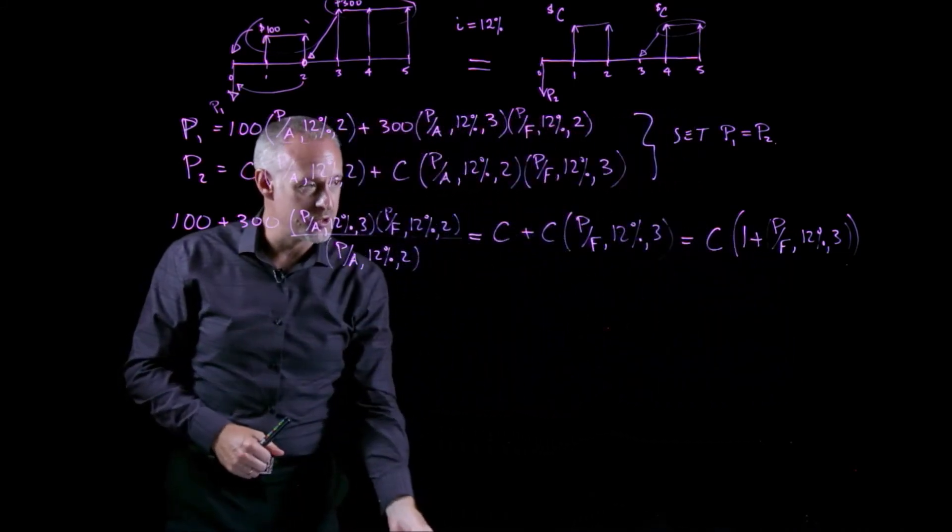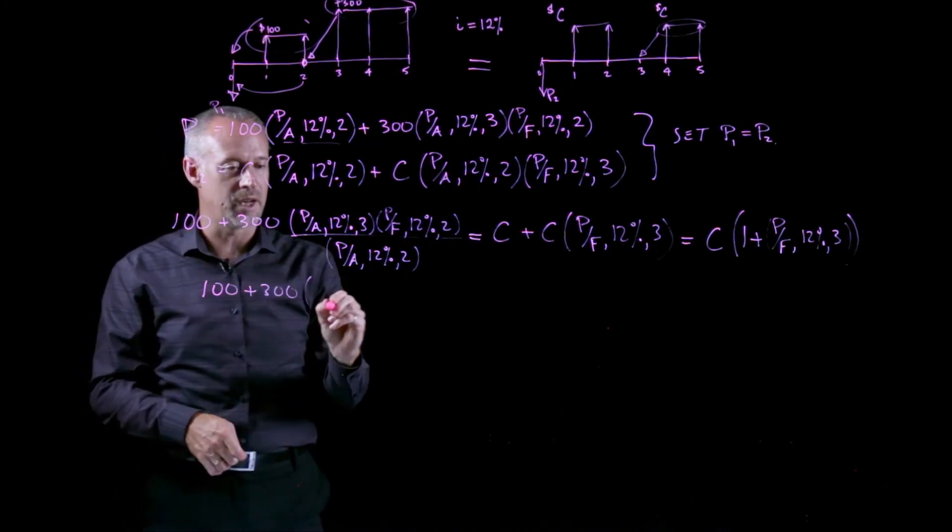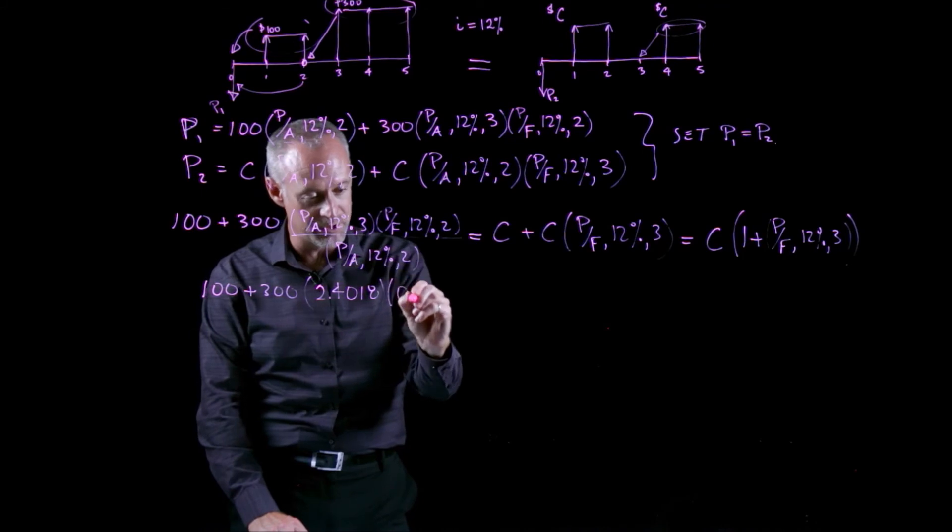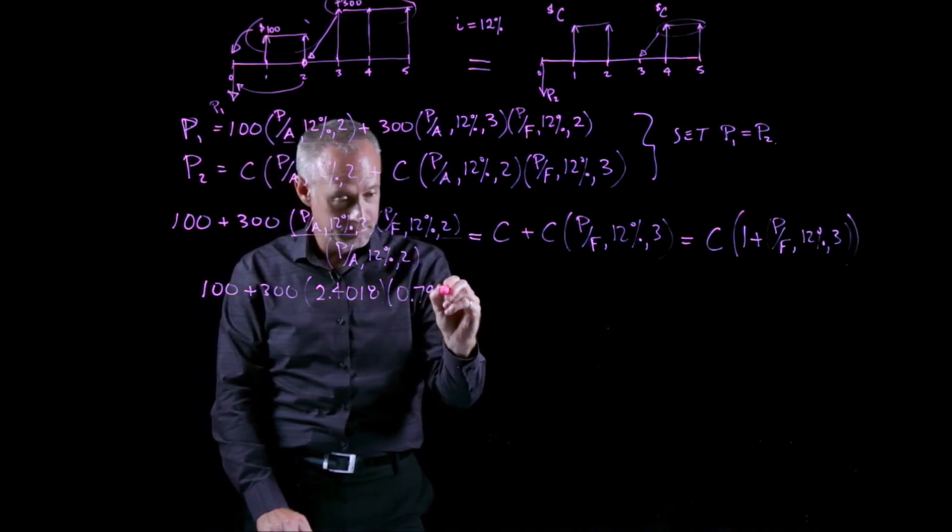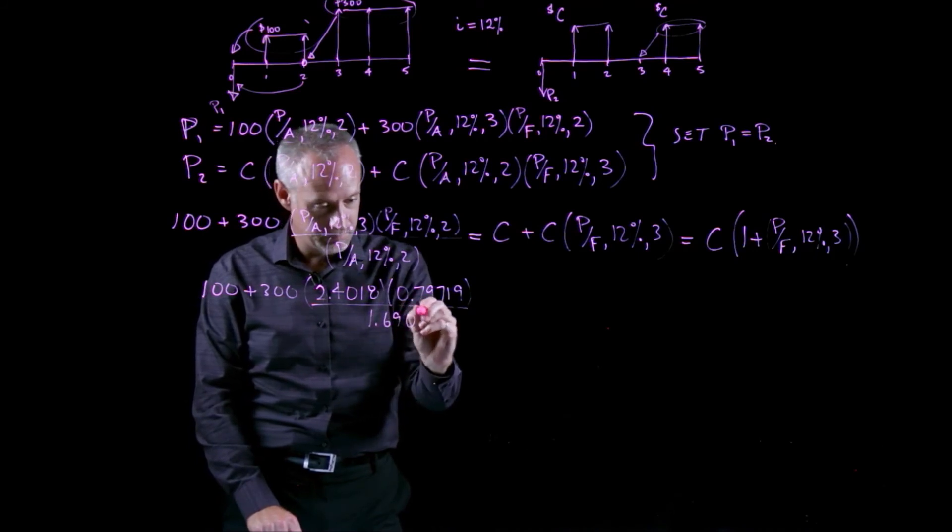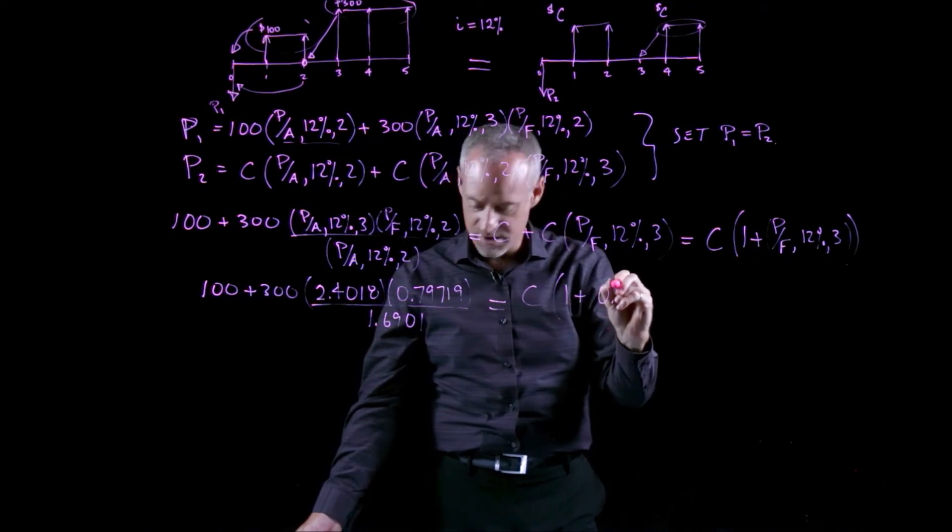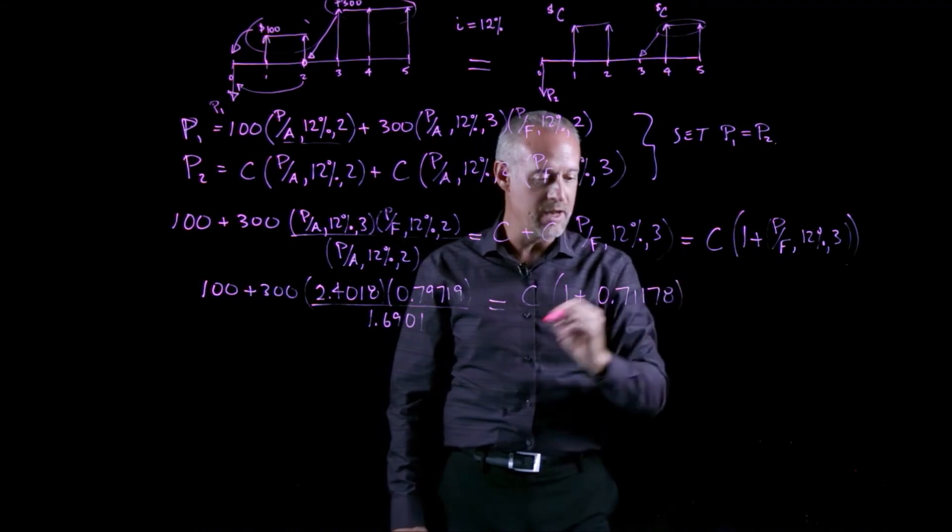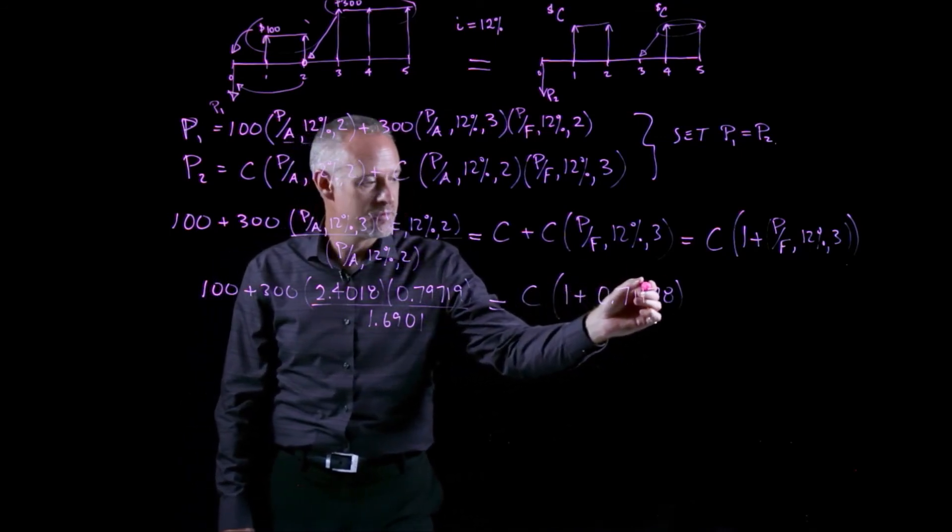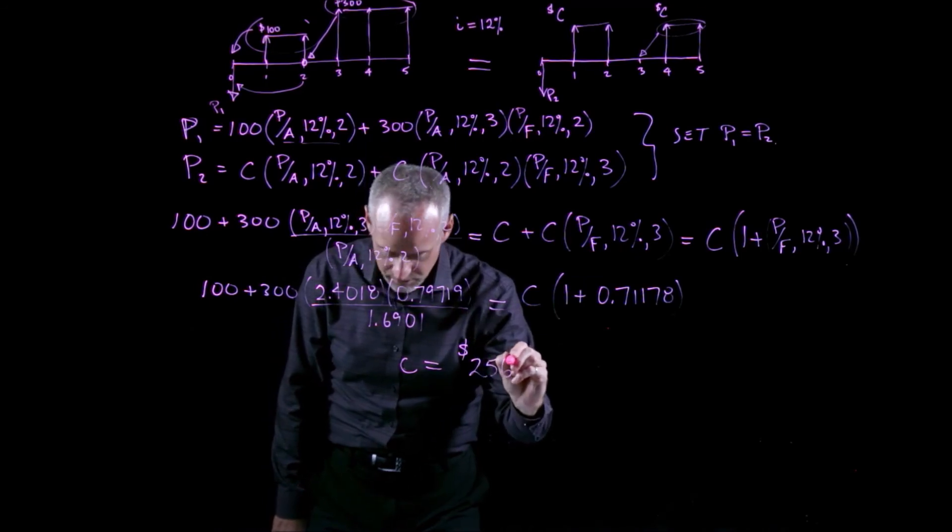So let's figure out what some of these factors are, and we can solve for the value of C. Simply I have 100 plus 300 times. You should check to see that you can also find these same values in your compound interest tables. It's good practice. And then divide by this compound interest factor. That's going to be equal to C times 1 plus this compound interest factor, which is 0.71178. Well, I can work out what this is, divide by 1.71178, and I can solve the equation for C equal to $256.96.